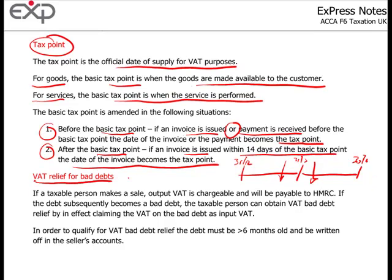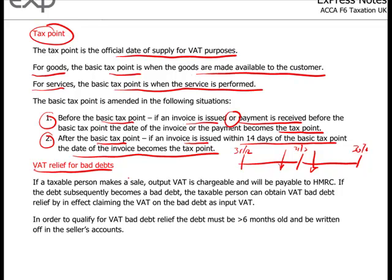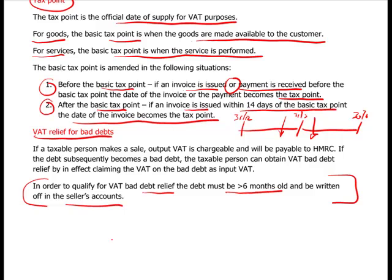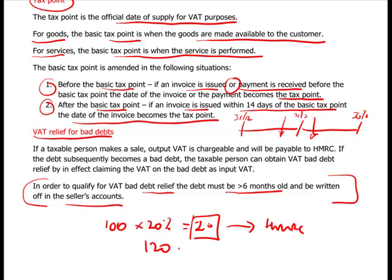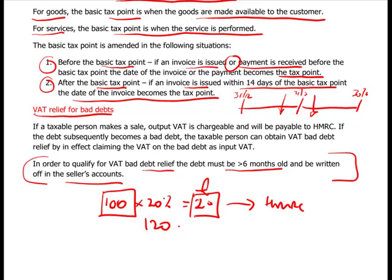In these troubled times, what happens if you don't get paid? Can you recover your VAT? The answer is yes, but you need to be careful about when. To qualify for bad debt relief, the debt must be at least six months old and you must have written it off in your accounts — you must have made an attempt to provide for it. For example, if you've sold something for £100 plus 20% VAT equals £20 of output VAT paid to HMRC, but you haven't been paid the £120, you're out of pocket. You make a provision in your accounts for the £100, and after six months you can put this through your VAT return and recover the £20.